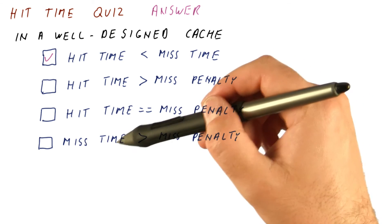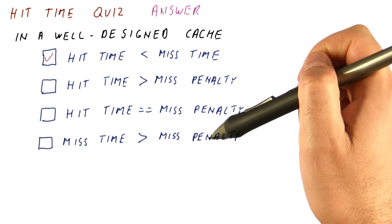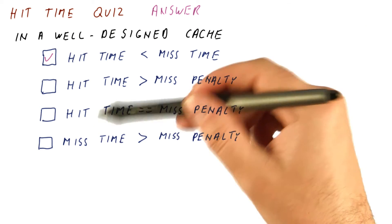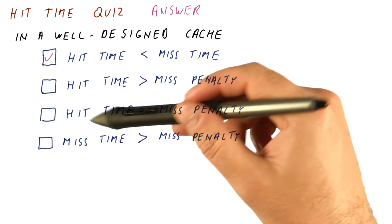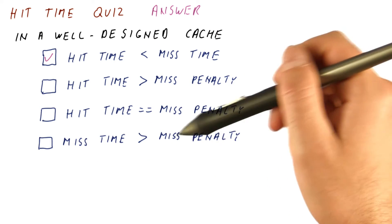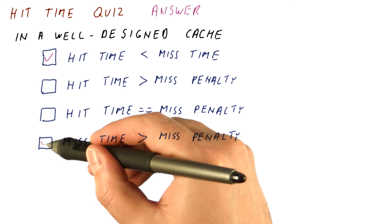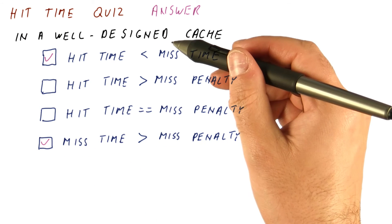And finally, miss time larger than the miss penalty. Miss time is equal to the hit time plus the miss penalty, which means that the miss time should always be larger than the miss penalty anyway. So this is true for every cache, not only a well-designed one.